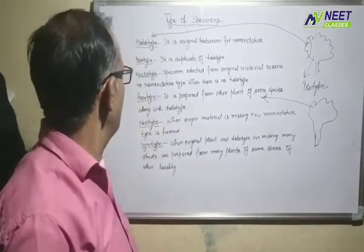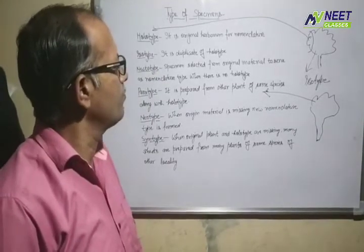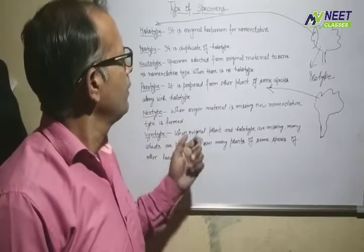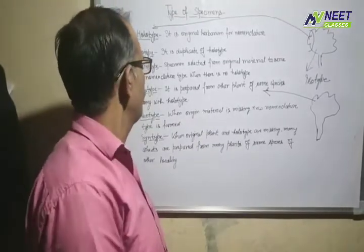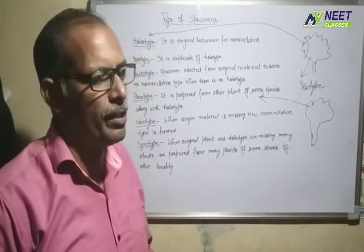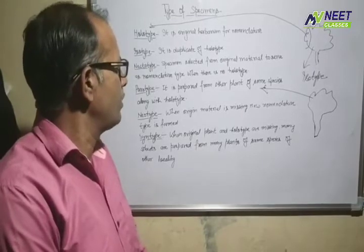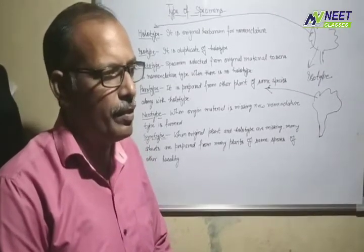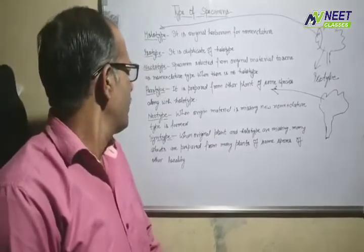The new type means new. When the original material is missing, a new nomenclature type is used. When the original material — Holotype, Isotype, or Lectotype — is lost due to natural phenomena, damage, or deterioration, we use the new type in this condition.